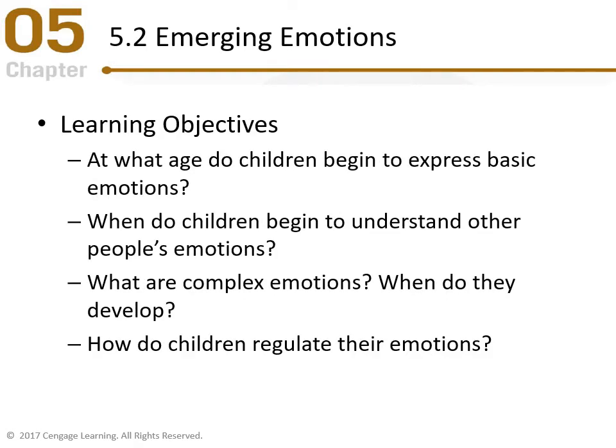Let's move on to emotions. We have a gamut — sad, happy, joyous — but what do they really mean? How did we develop them and what are the different types? There's basic and complex. Our learning objectives for this section: at what age do children begin to express basic emotions? When do children begin to understand other people's emotions? What are complex emotions and when do they develop? And how do children regulate their emotions? A two-year-old is way different from a six-year-old in emotional regulation.